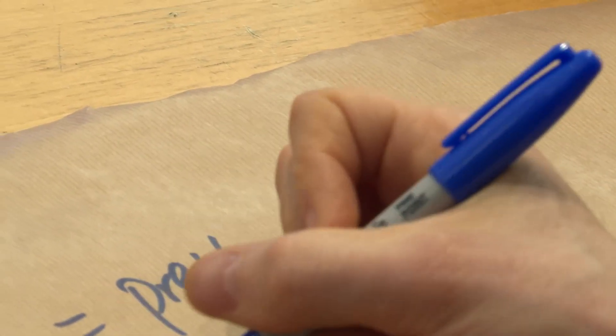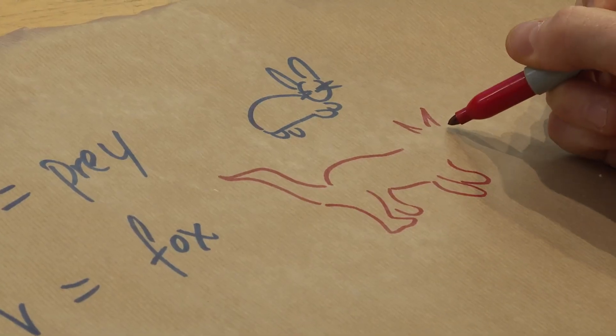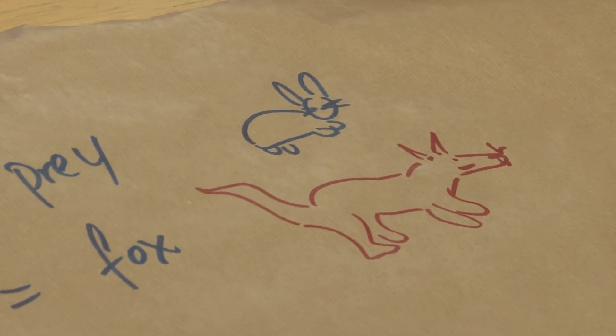And then V is going to represent our fox. We've got like a big tail, a body, pointy ears, and like a pointy nose. Oh god, is that a fox? We have a rabbit and a fox.